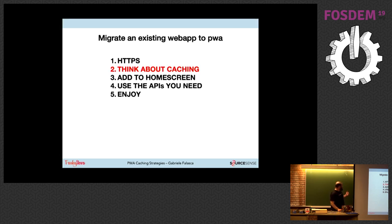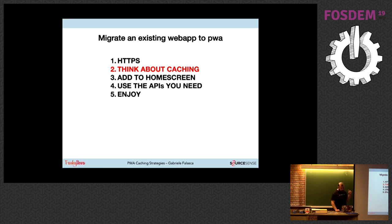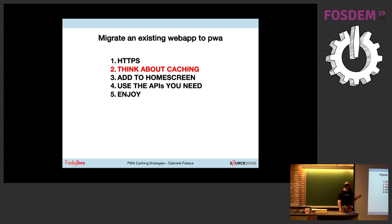If you have an existing web application and you want to migrate it to a Progressive Web App, you have to follow these steps: make sure your application follows the HTTPS protocol, think about caching — which is the main subject — implement an add-to-home-screen button for mobile visualization, and use all the APIs you need.